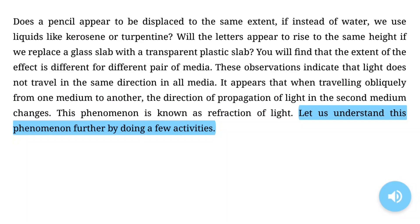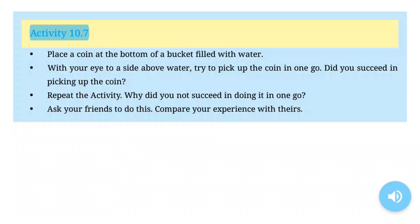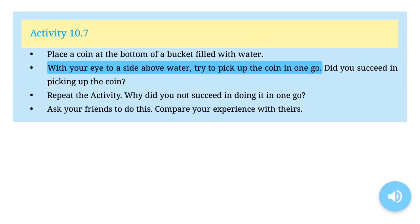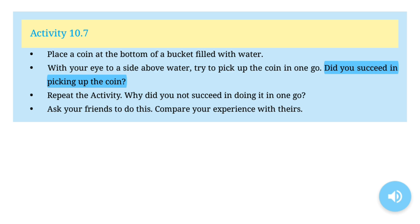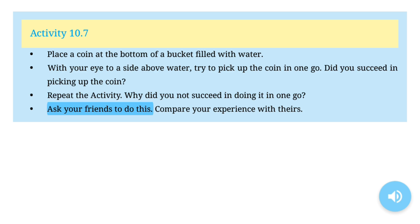Activity 10.7: Place a coin at the bottom of a bucket filled with water. With your eye to a side above water, try to pick up the coin in one go. Did you succeed in picking up the coin? Repeat the activity. Why did you not succeed in doing it in one go? Ask your friends to do this. Compare your experience with theirs.